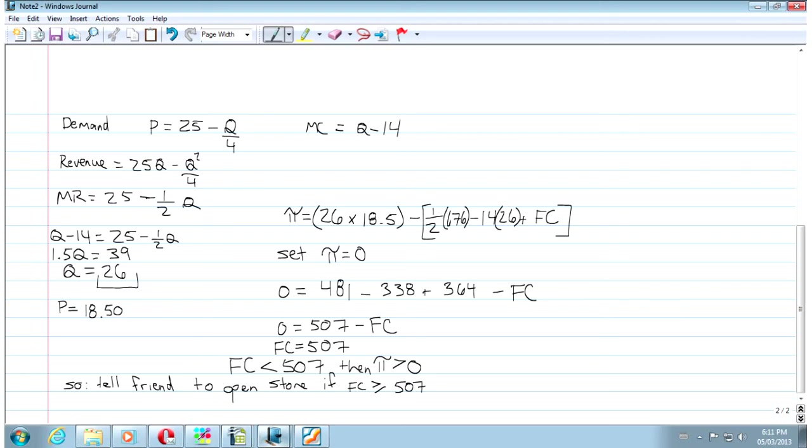Another way to do this type of problem is that you're given what fixed costs are. You compute exactly the same thing, only you know this. And if profits are less than 0, then it is a natural monopoly. If profits are greater than or equal to 0, then it is not a natural monopoly.